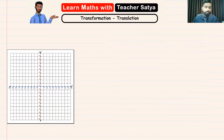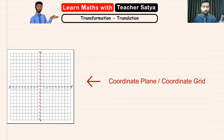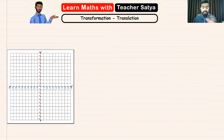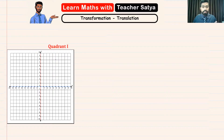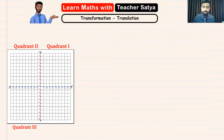What you see here is what we call the coordinate plane or the coordinate grid. In a coordinate grid, there are totally four quadrants. The first quadrant is here, the second quadrant is here, the third quadrant is here, and the fourth quadrant is here.